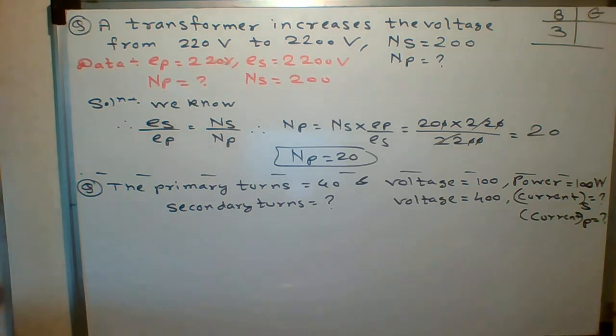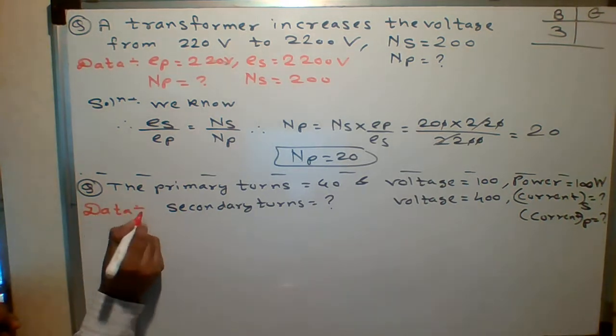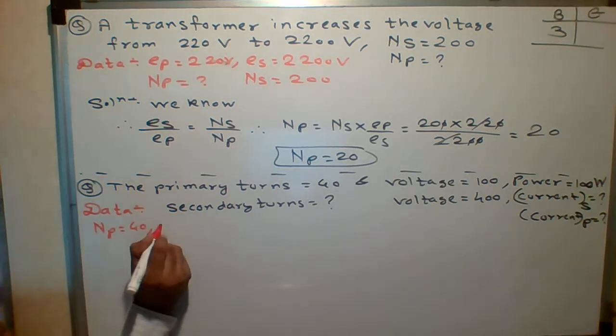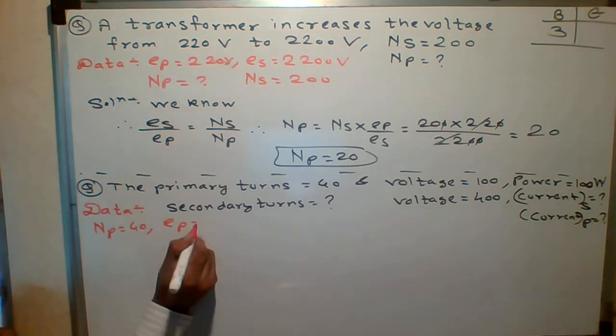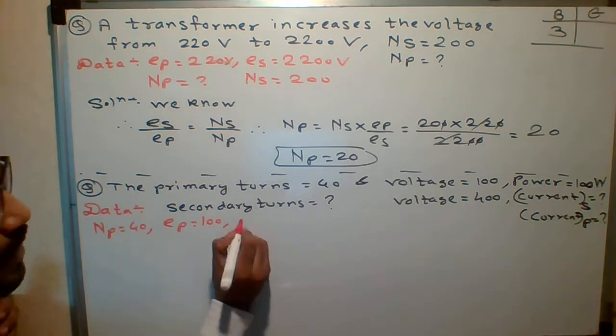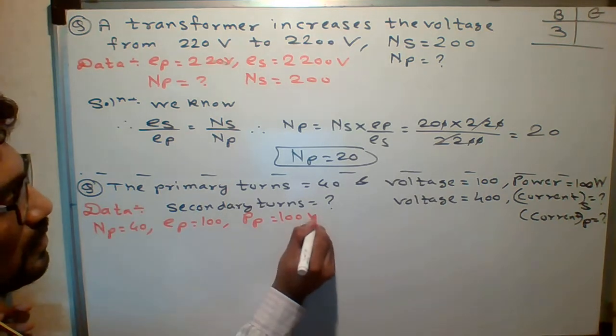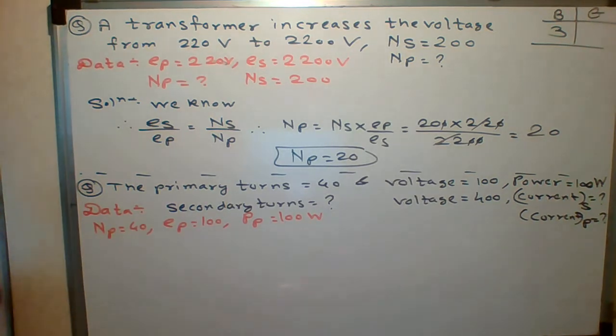Now all of you answer. Next question. So students, let me write down the data. It is same as the previous what we have done. So let me write down the data first. Primary turns method NP is given how much? 40. Primary voltage method EP is given 100. Right. Power is given. Power at primary side PP. Okay. Is 100 watt.